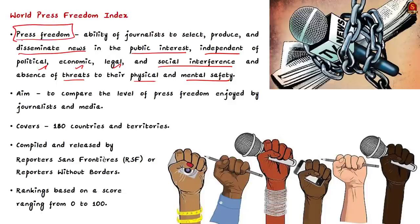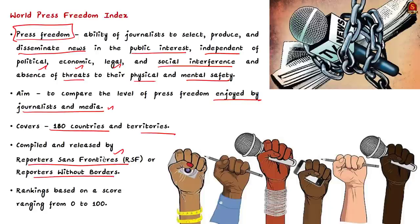The index is released with an aim to compare the level of press freedom enjoyed by journalists and media in 180 countries and territories across the globe. It is compiled and released by RSF, which stands for Reporters Sans Frontiers or Reporters Without Borders, a Paris-based NGO. Rankings are based on a score ranging from 0 to 100, where a score of 100 means the highest possible level of press freedom and 0 means the worst.